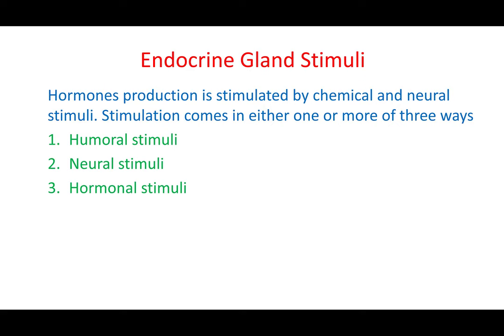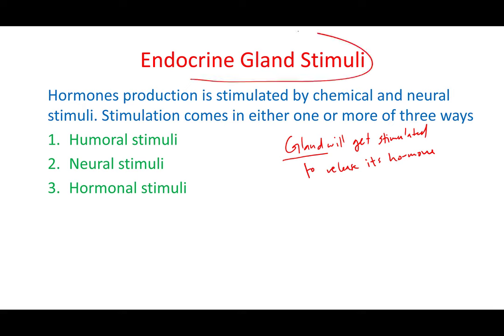The other mechanism is endocrine gland stimuli — a gland gets stimulated to release its hormone. There are three ways this can happen: the first is humoral stimuli, the second is neural stimuli, and the third is hormonal stimuli.